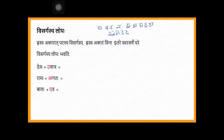Before going to the third structure, visargasya lopaha — in the previous lesson there was a point: mrudhuvyanjana. What is mrudhuvyanjana? These many letters are called mrudhuvyanjanas: ya, va, ra, la, jha, bha, gha, dha, dha. These many letters are called mrudhuvyanjanas. You need to remember them.